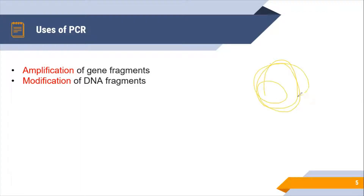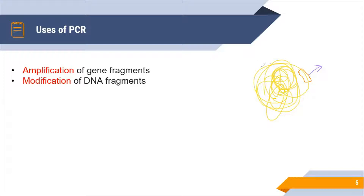The next use is modification of DNA fragments. Suppose you want to modify a specific fragment of the whole DNA. To do that, you first have to isolate that specific fragment, and for that we use PCR. By using PCR with specific primers, we can amplify only that fragment and get many copies of it. After getting that part of the DNA, we can easily modify it using restriction enzymes and other molecular procedures.